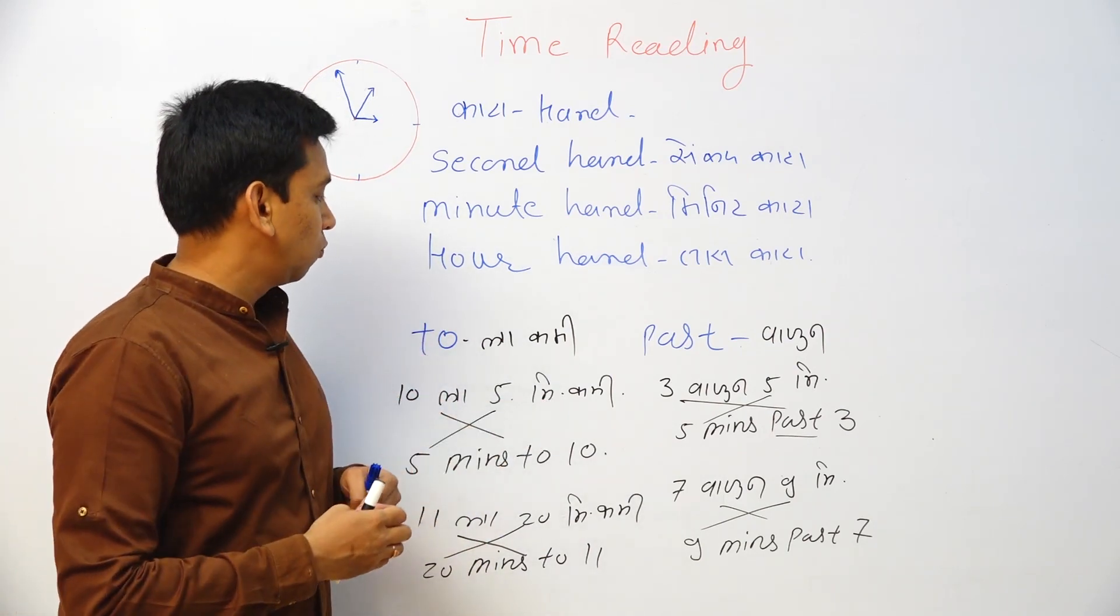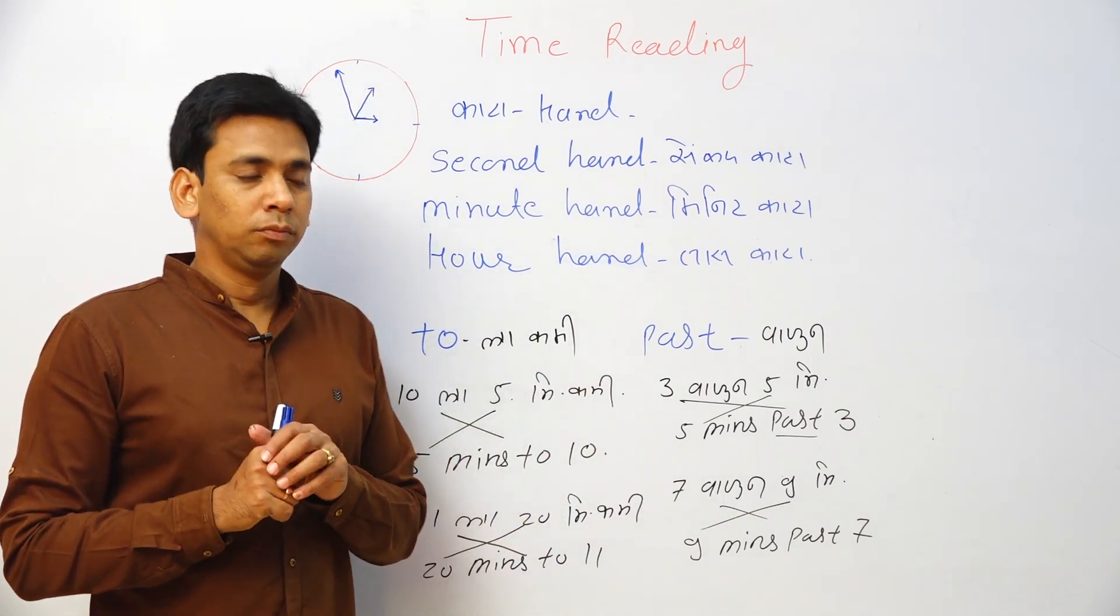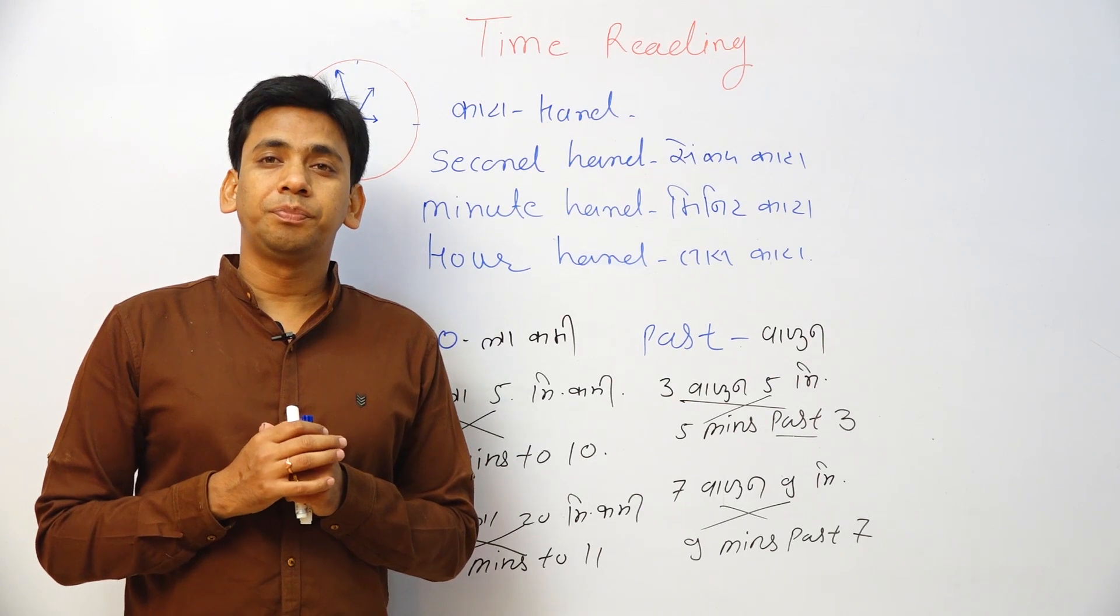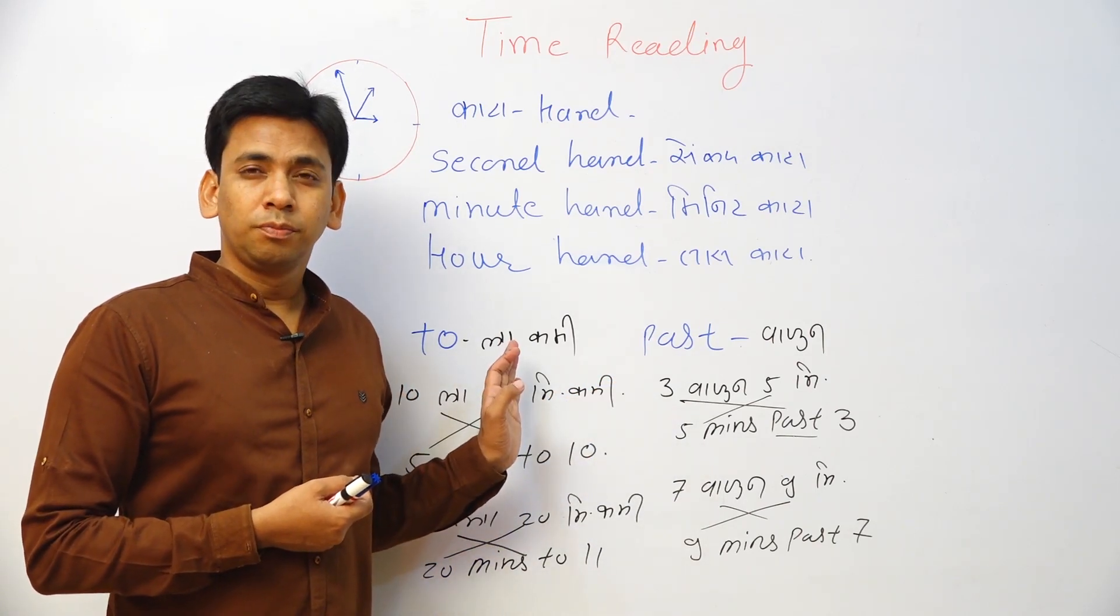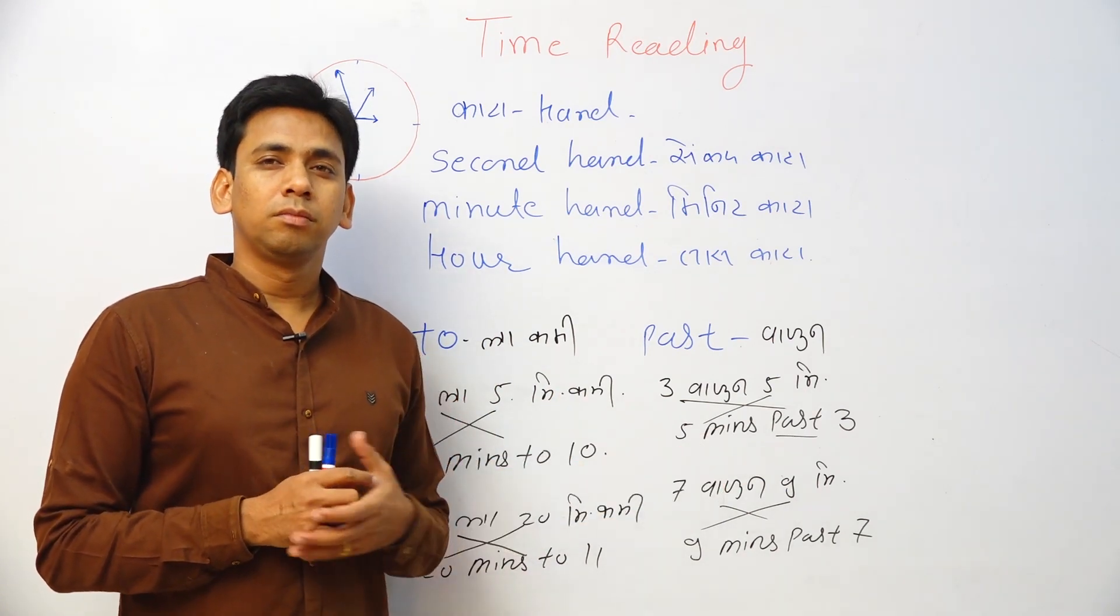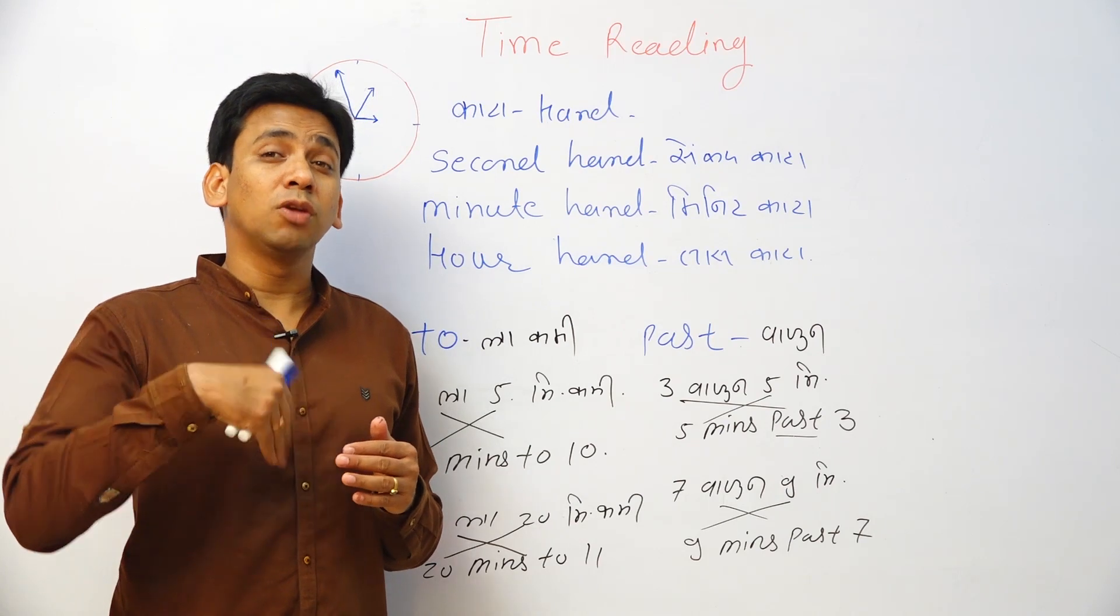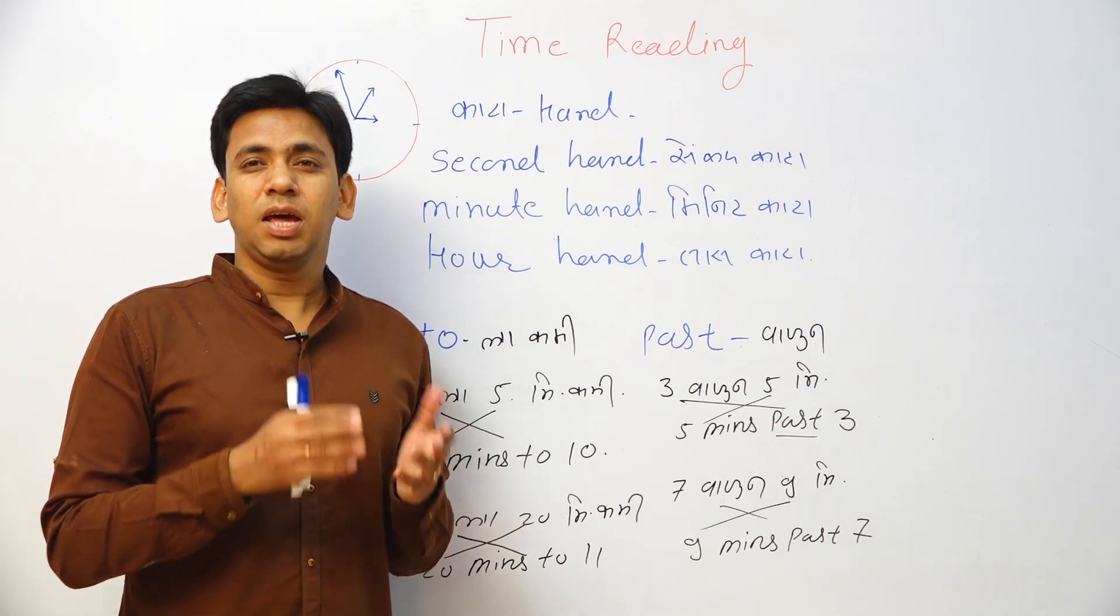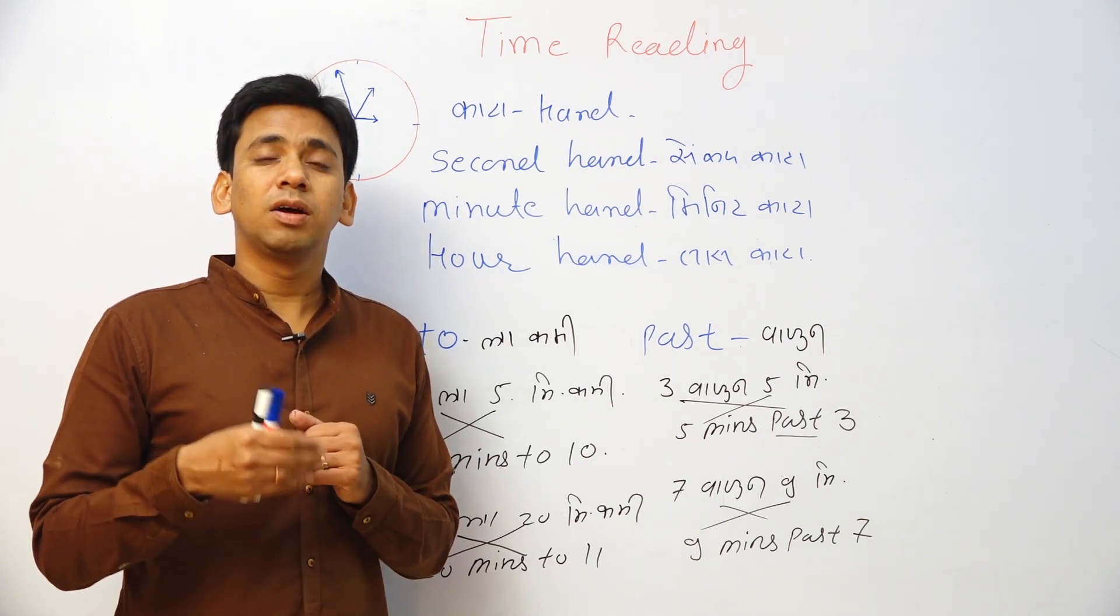Let us have some practice of this 'to' and 'past'. It is more important while telling time. I want to say 12 o'clock minus 10 minutes. What can I use? To or past? 'To'. How can I say? Ten minutes to twelve. 12 o'clock plus 10 minutes. What can I use? Past. Ten minutes past twelve.